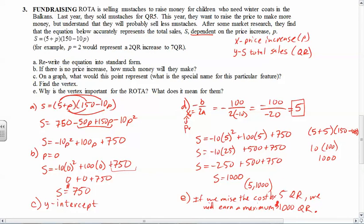Now a five Qatari Real increase means that they would have to take the original 5, add 5 more, which means if they charged 10 Reals they will make the maximum amount of money. The total sales will be at the maximum. So there you go, I hope that helped to get through that question, and that's all.